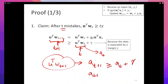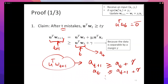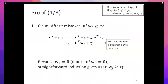What is a₀? That's u^T w₀. The initial weight vector is the zero vector, so u^T w₀ = 0. Telescoping: u^T w_t ≥ t·γ, because each of the t updates contributes at least γ. So after t mistakes, u^T w_t ≥ t·γ.